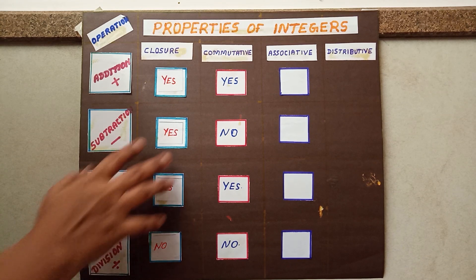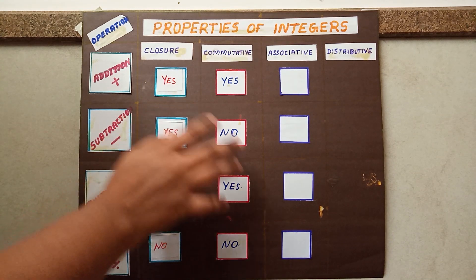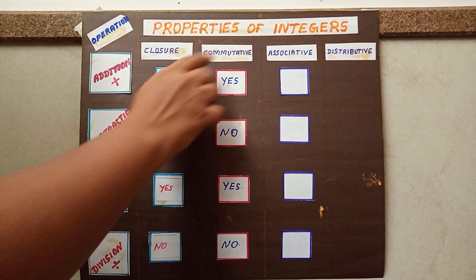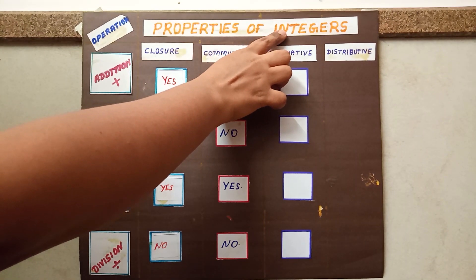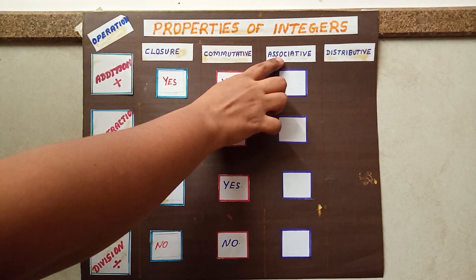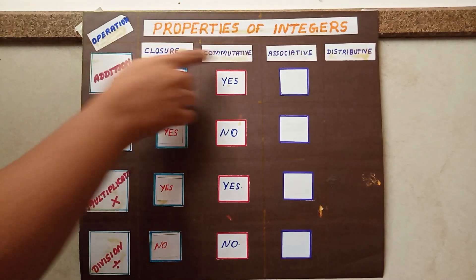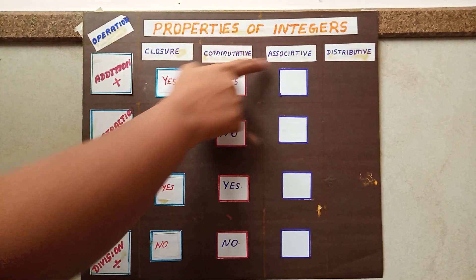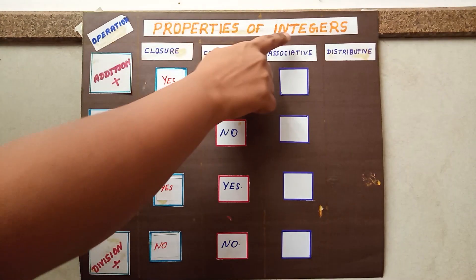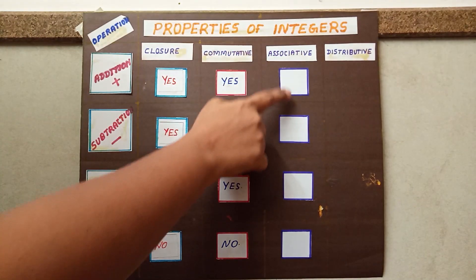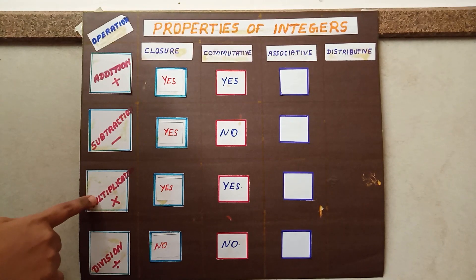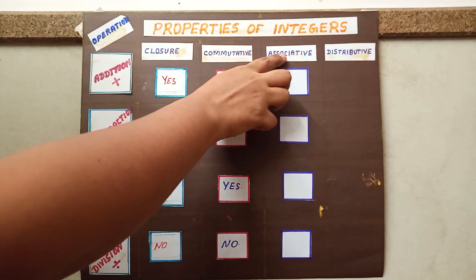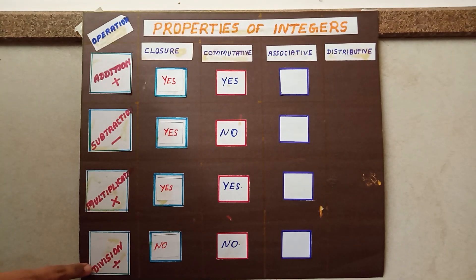After this class we should be thorough with the answers of four questions. What are the four questions? Does the integer set satisfy associative property under addition? Does the integer set satisfy associative property under subtraction? Does the integer set satisfy associative property under multiplication? Does the integer set satisfy associative property under division?